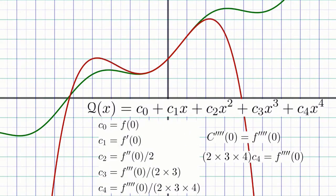And likewise, for a quartic approximation, we need to determine a fourth coefficient, c4, which comes from setting the fourth derivatives of the approximation and f equal to each other at x equals 0. This yields 2 times 3 times 4 times c4 equals the fourth derivative of f at 0, which means c4 is equal to the fourth derivative of f at 0 divided by 2 times 3 times 4.